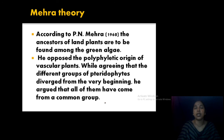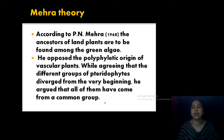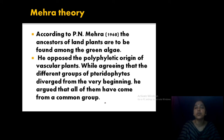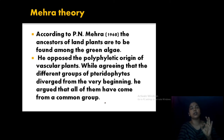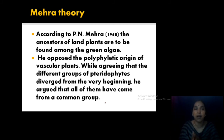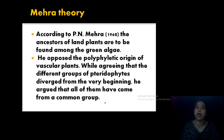According to Mehra, the ancestors of land plants are found among green algae. He opposed polyphyletic origin but agreed that different groups of thallophytes diverged from the very beginning, all having a common ancestral group. Most of the discussed theories support polyphyletic origin — not a common ancestor but many. But according to Mehra, it is not polyphyletic — it developed from a common group of algae.